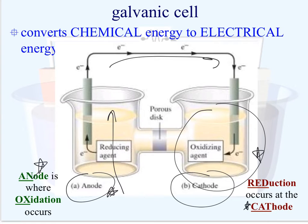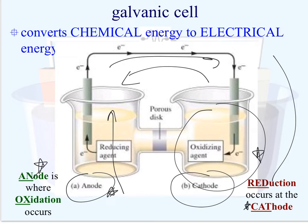Please be aware that just because I have the anode drawn on the left and the cathode on the right doesn't mean that's how it must be set up. I could swap the half-reactions, and although electrons would flow in the same direction — from anode to cathode — they would actually flow in the opposite physical direction because we swapped the positions of the anode and cathode. This setup is not standard with respect to where the anode and cathode are, so you need to always look at which half-reaction is in which container to establish what direction your electrons will flow.